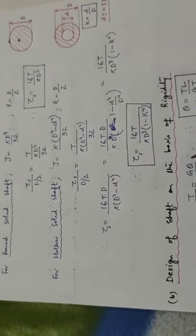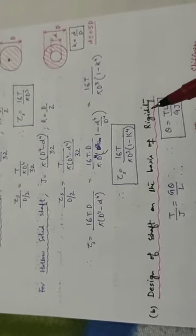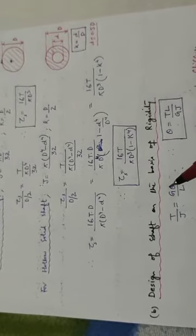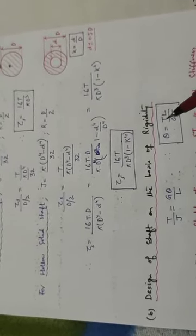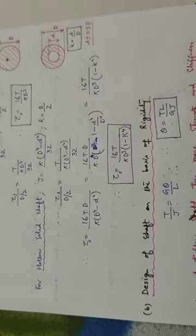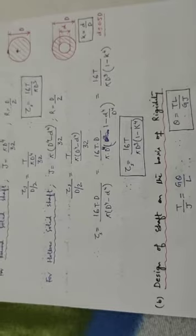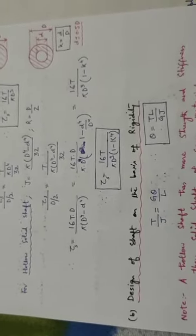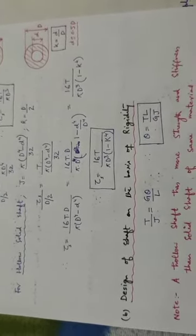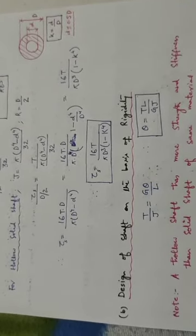The next approach is designing the shaft on the basis of rigidity, meaning on the basis of angle of twist. The formula used is θ = TL/GJ, derived from the torsion equation. It is also noted that a hollow shaft has more strength and stiffness than a solid shaft of the same material.